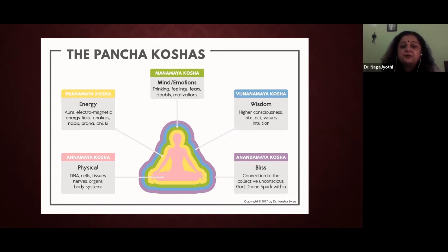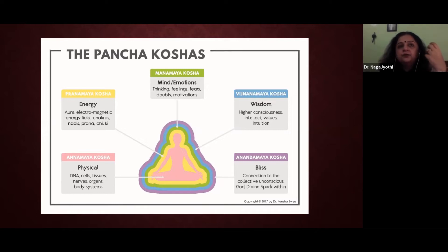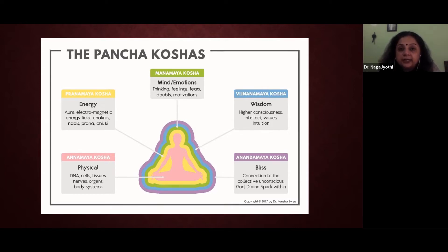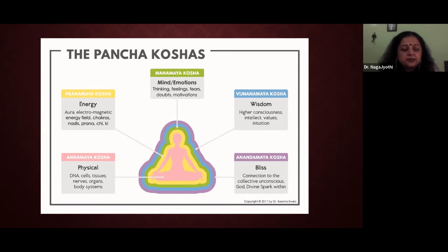Next is the pranamaya kosha — the energy sheath. The physical body is driven by energy: when a person is alive, we say prana, the life force or chi, is there. When a person is dead, you give him oxygen, food, and water, but until the prana is there, the person is not alive. The pranamaya kosha — encompassing aura, electromagnetic energy, chakras, nadis, prana, chi — is the most important bridge between mind and body.